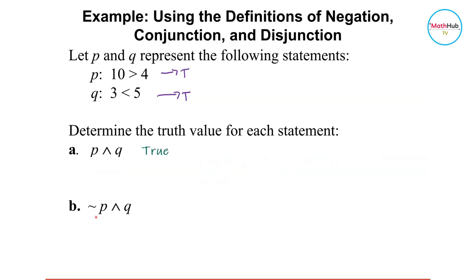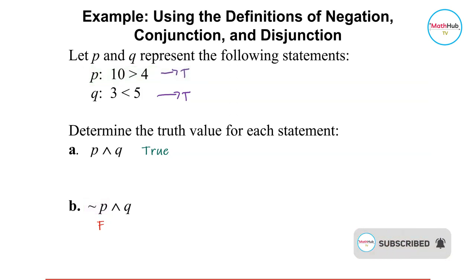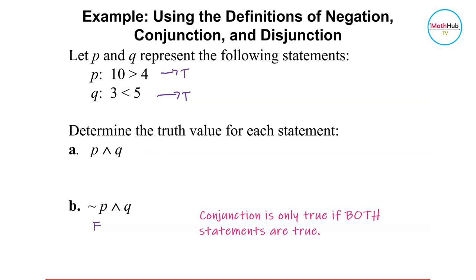For letter B, we have not-P and Q. If you negate P, and P is true, negating it makes it false. So not-P is now false, and we still have a conjunction. For conjunction, both statements must be true for the result to be true. Since not-P is false and Q is true, one of the statements is false, so the conjunction here is false.